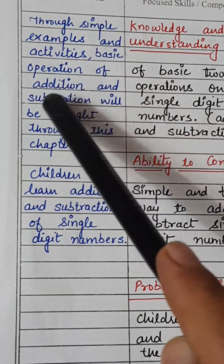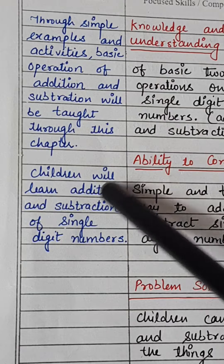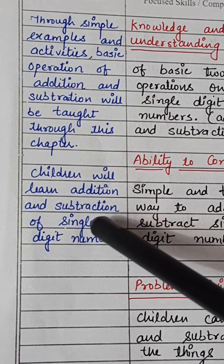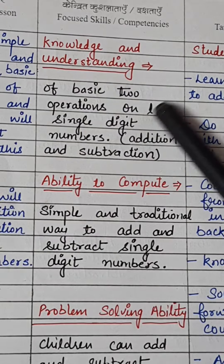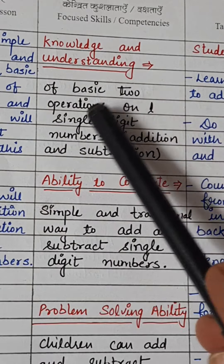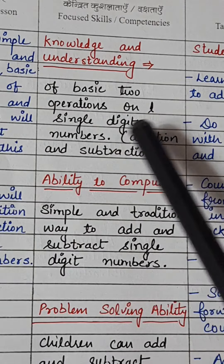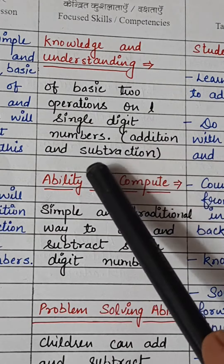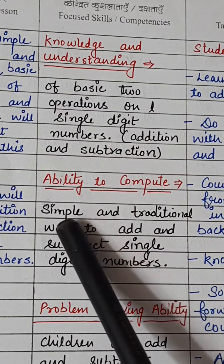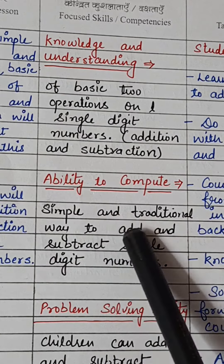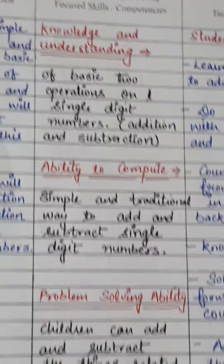Basic operations of addition and subtraction will be taught through this chapter. Children will learn addition and subtraction of single digit numbers. The first competency is knowledge and understanding of basic two operations on single digit numbers — addition and subtraction — and the ability to compute in a simple and traditional way.